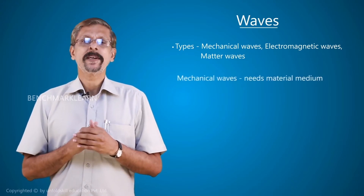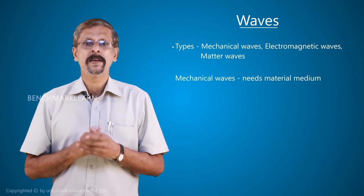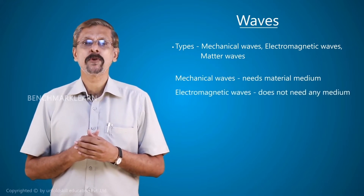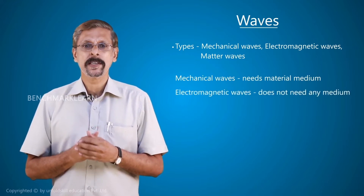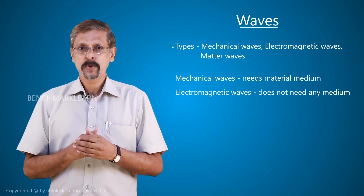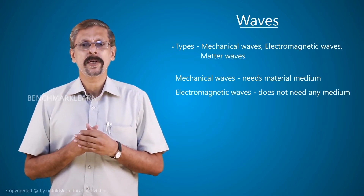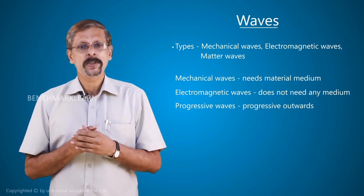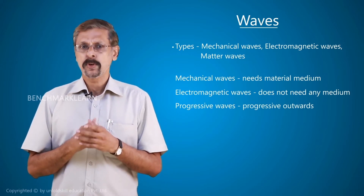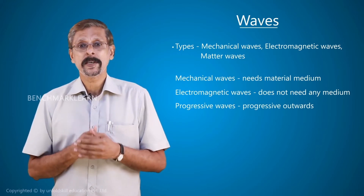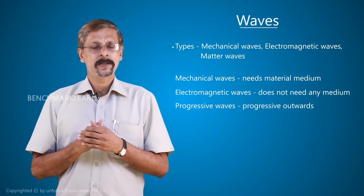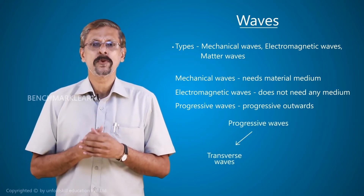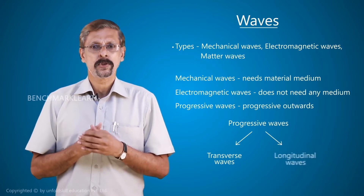In the case of mechanical waves, we need a material medium for the propagation, whereas in the case of an electromagnetic wave, it does not need any medium at all. We are going to talk about what is known as a progressive wave — any wave which progresses outwards is a progressive wave. Depending upon the type of vibration of the particles, we can categorize progressive waves as transverse waves and longitudinal waves.